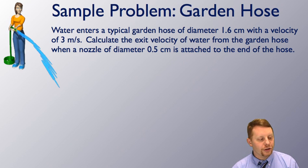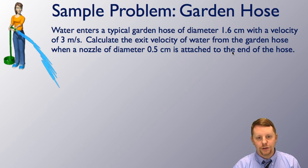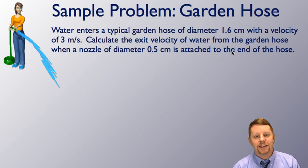Let's take a look at a garden hose problem. Water enters a typical garden hose of diameter 1.6 centimeters with a velocity of 3 meters per second. Calculate the exit velocity of water from the garden hose when a nozzle of diameter half centimeter is attached to the end of the hose. You've probably done this before where the water is coming out of the garden hose and you put your thumb over the end in order to shrink down the diameter of the end of the pipe to see that the water comes out more quickly, squirts a further distance.